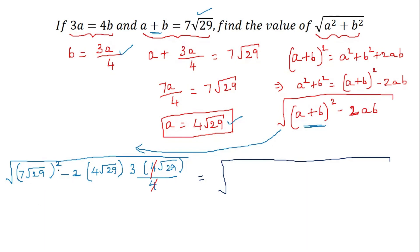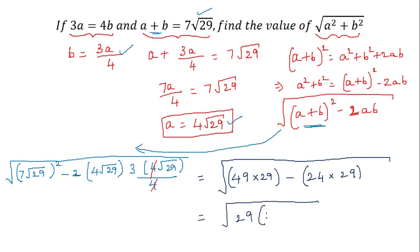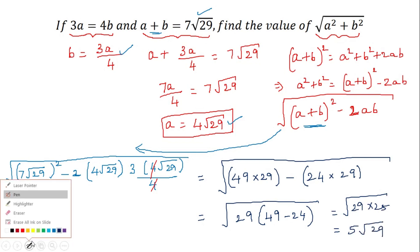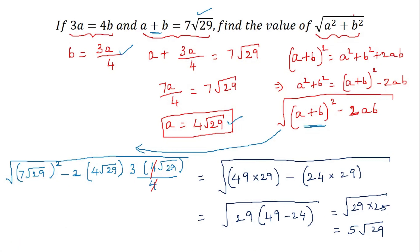We can write 7 root 29 squared as 49 times 29. Then minus 2 times 4 times 3 is 24, and root 29 times root 29 is 29, giving minus 24 times 29. Taking 29 as common factor, we get square root of 29 times 49 minus 24, which is square root of 29 times 25. This equals 5 root 29, which is our answer. The value of square root of a squared plus b squared is equal to 5 root 29.